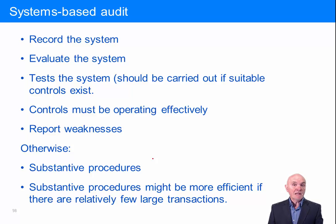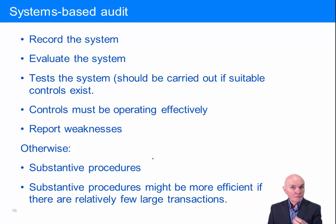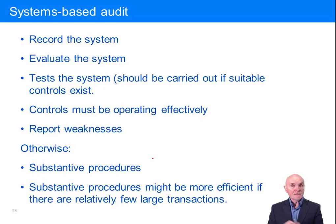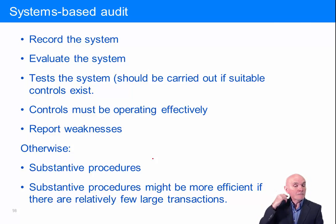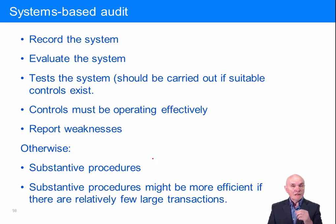Then we're going to evaluate it — make a judgment as to whether or not we think the system is putting the controls we would hope to have into place. So if we find that overtime is worked without any sort of authorisation, we would see immediately there's a gap, a weakness in the internal control system. There's nothing to prevent people authorising their own overtime, and presumably the wage bill will go up and up. We test the system because there can be a disparity between what people should do and what people actually do.